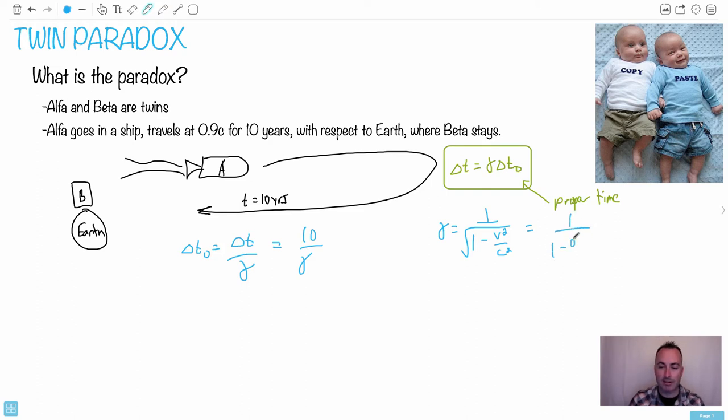So if we do this, then we end up with 1 minus 0.9 squared C squared over C squared. The C squareds cancel out. So we get 1 over square root of 1 minus 0.81. Let me actually figure that out. That's 0.19. I take 1 over that. I end up with Gamma equals 2.29.